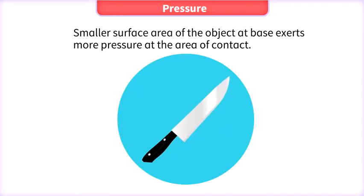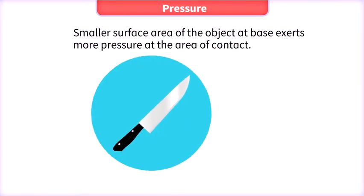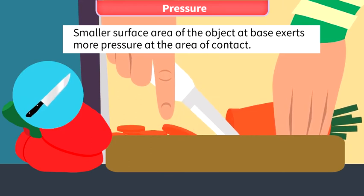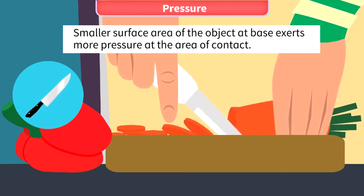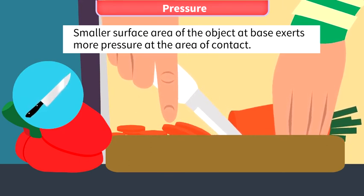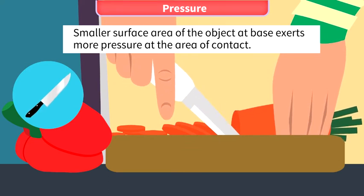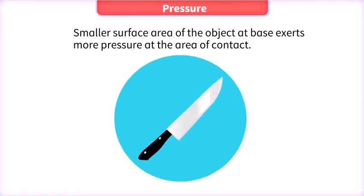The edges have a smaller area of contact, so the force applied is concentrated on the sharp edge and it enables the knife to cut the vegetable easily. The flat side of the knife has a larger area of contact, so the force applied is spread over the side and it will be difficult to cut the vegetable.